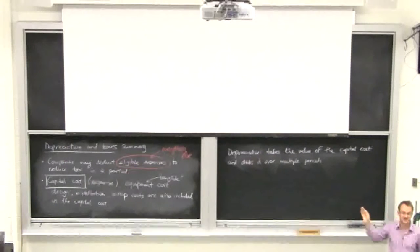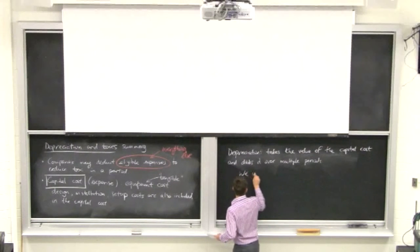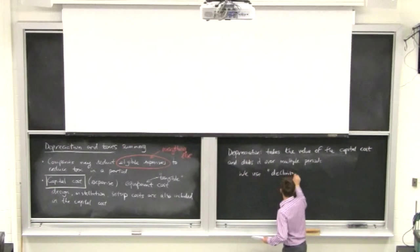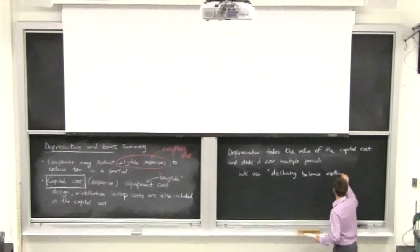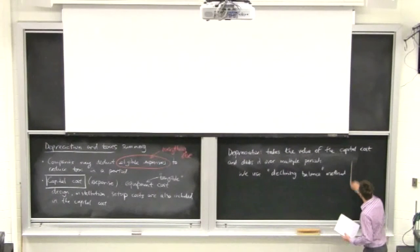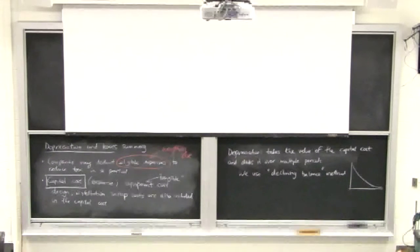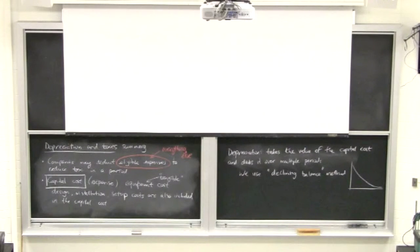In the United States they have different systems for how that division occurs. In Canada, there's really only one method: the declining balance method, and that's what we'll consider in this course. There are alternatives like straight-line or double declining balance, but we focus on declining balance. We illustrated in the last class that this gives an exponential decrease in book value — recognition by the government that equipment is most productive in its earlier life.